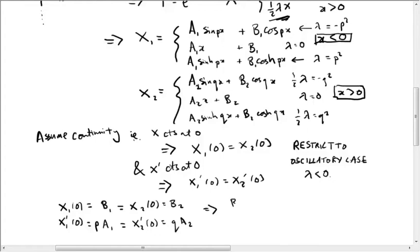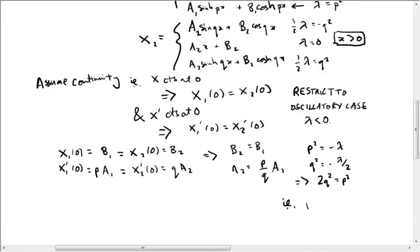So in other words, b2 is b1 and a2 is p over q times a1. So what's p and q again? Well, remember p squared is minus lambda and q squared equals minus lambda over 2. So 2q squared equals p squared. In other words, p is q root 2.